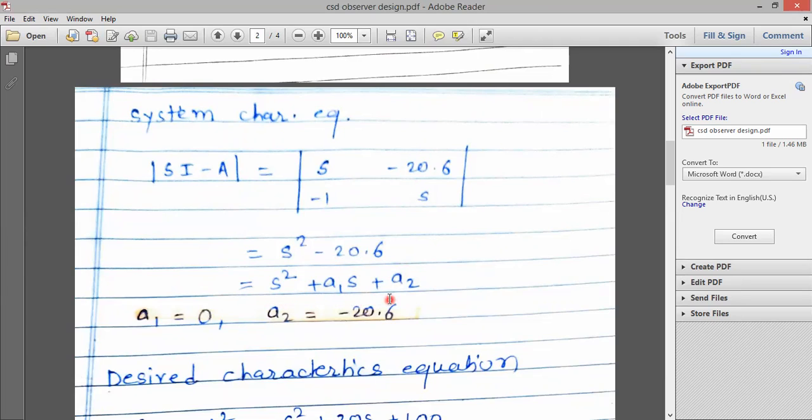Compare with the standard equation, we get the A1 and A2 coefficient. So it is a 2 by 2 matrix, N is equal to 2. So we get the A1 and A2.